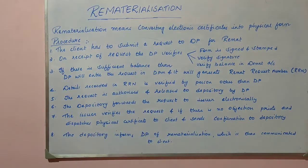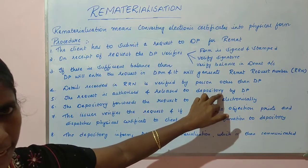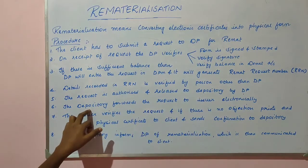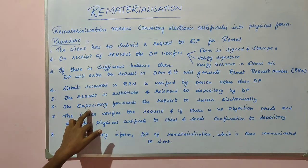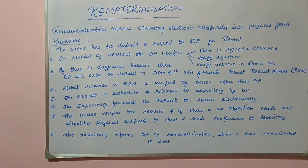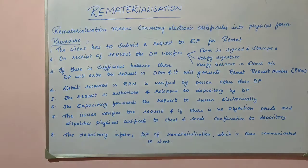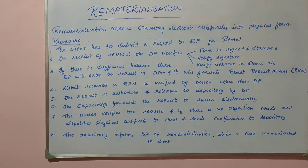Once this verification is over, the depository participant authorizes the form and releases it to the depository. The depository then forwards the request form to the issuer electronically. Once the issuer receives the request form, it verifies all the details. If there is no objection, the issuer will print a physical certificate and send it to your address.